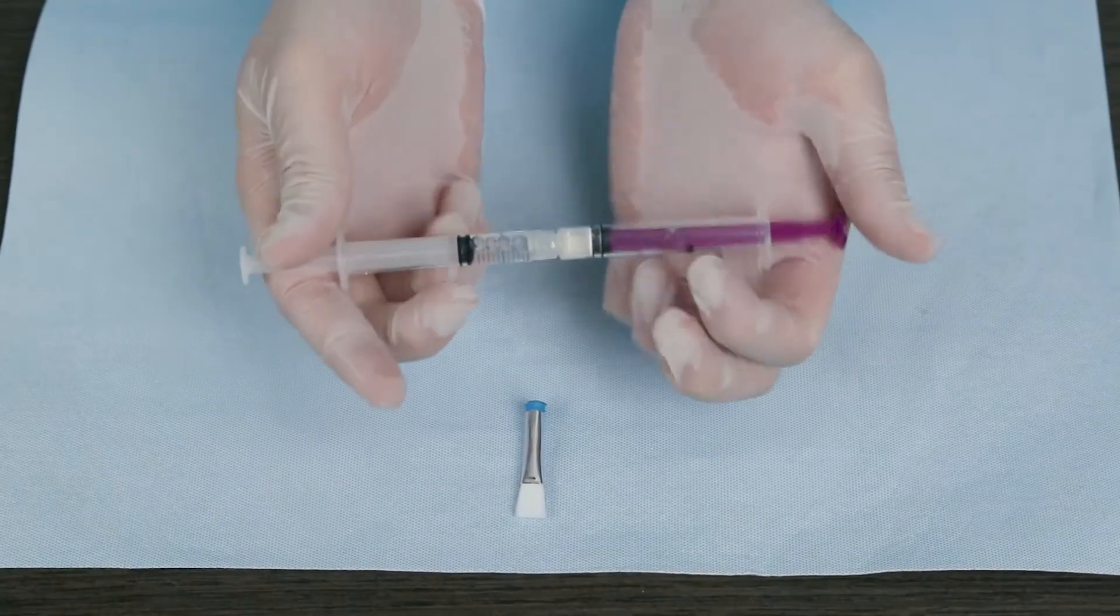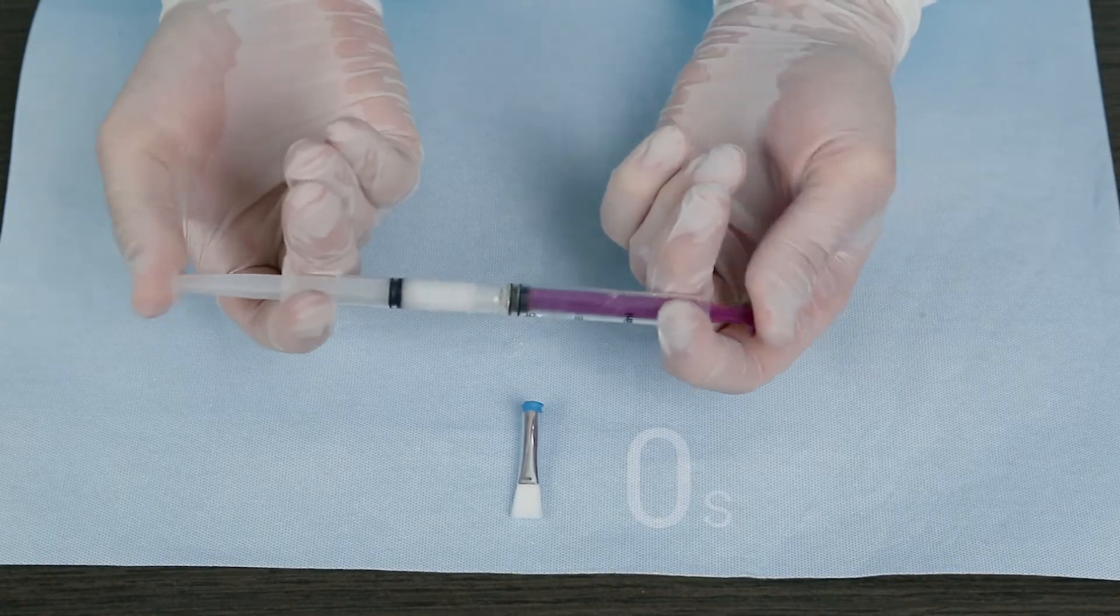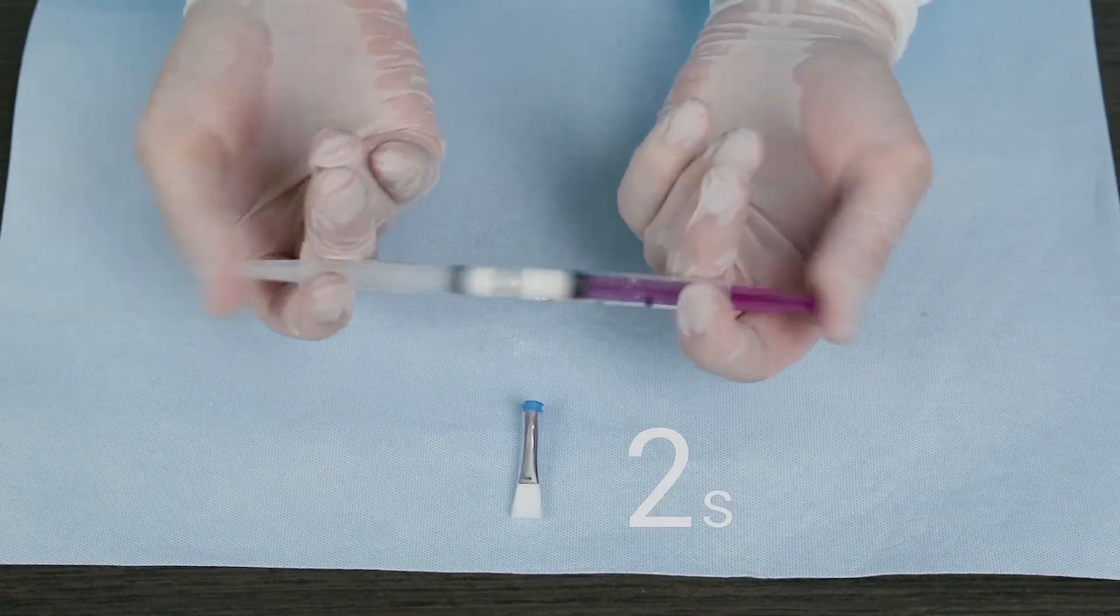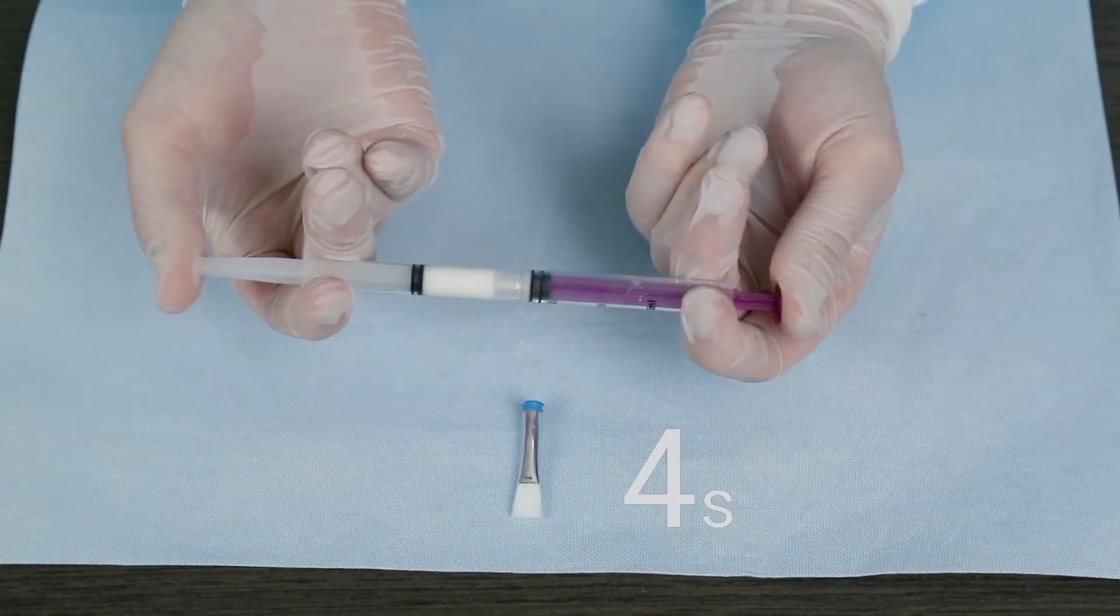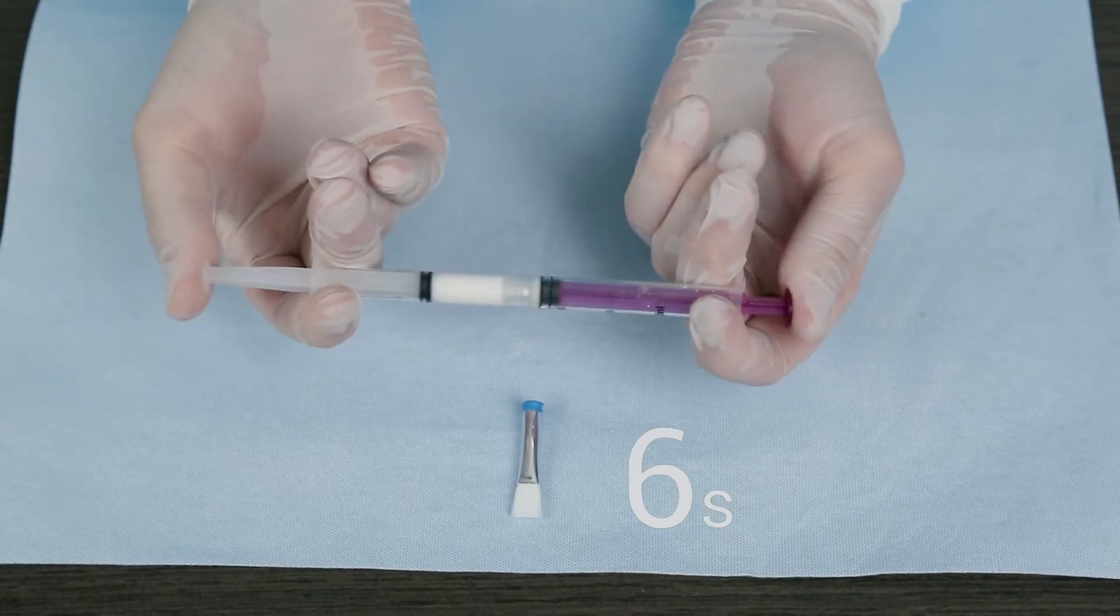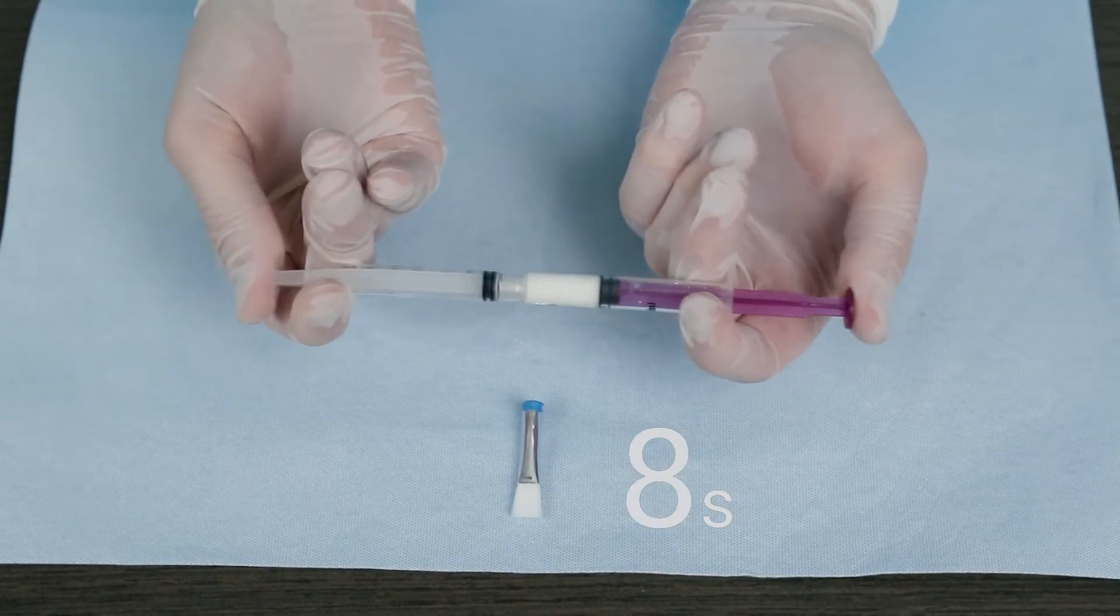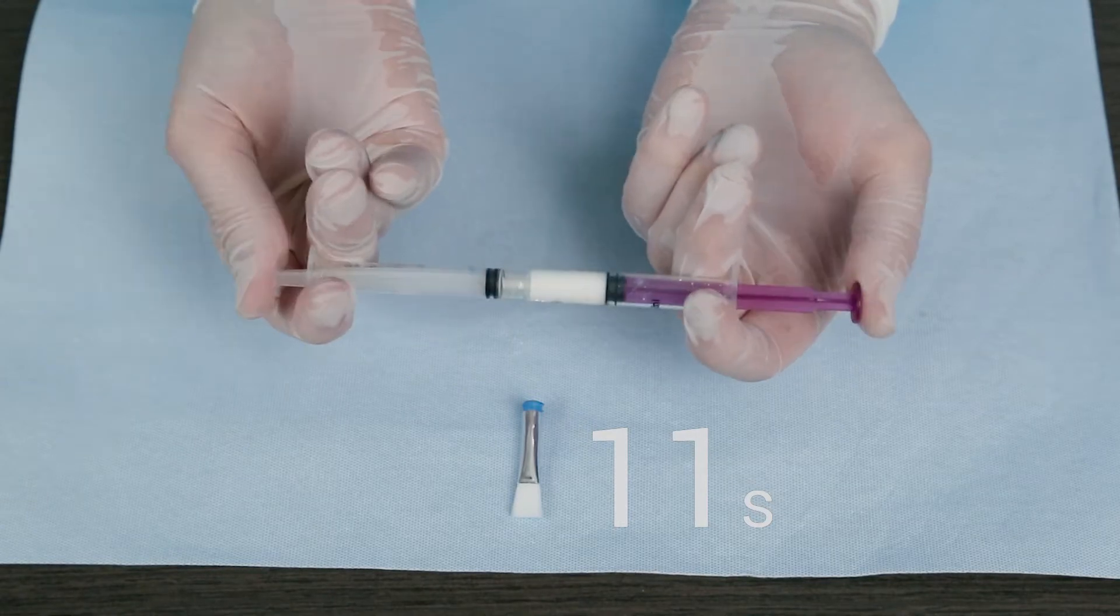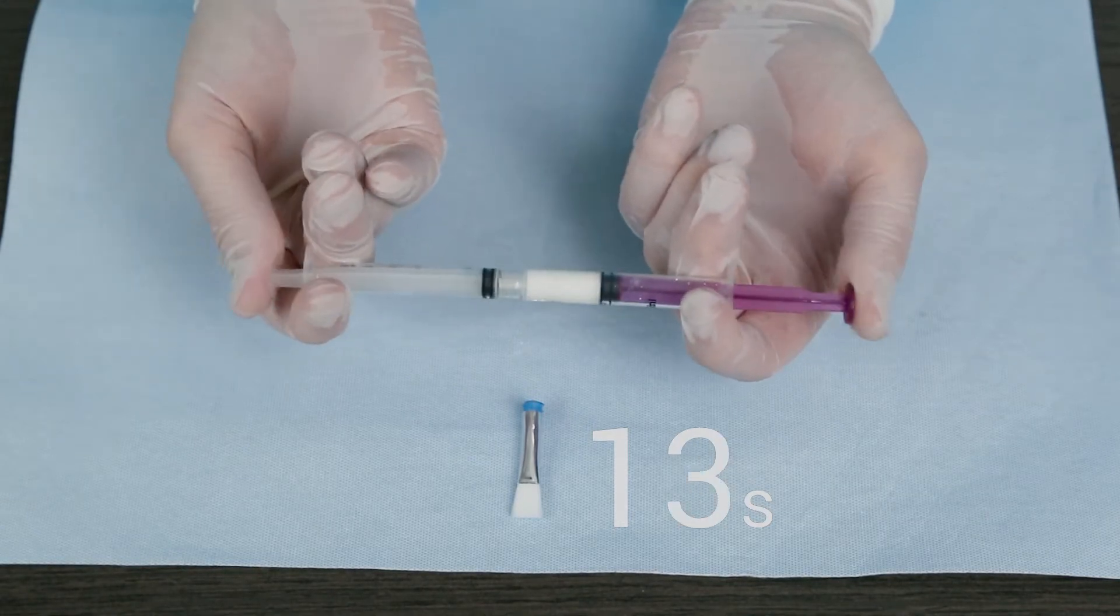You will mix the contents of the two syringes by vigorously pushing the plungers back and forth for 30 strokes, which is approximately 10 to 15 seconds. Consider using a timer as it is easy to lose track of time, which will cause the product to become too viscous to apply. The formation of tiny bubbles in the mixture is normal.